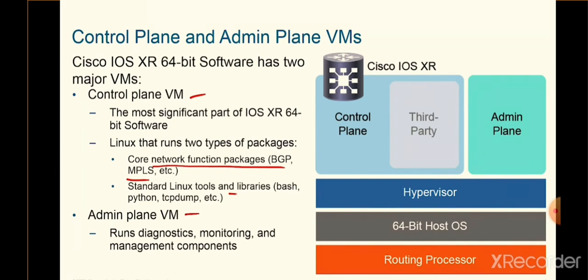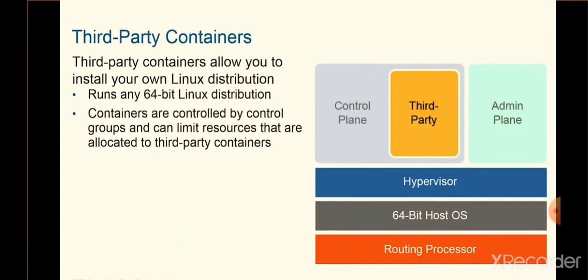The control plane also includes standard Linux tools and libraries. Since we're running Linux, we take advantage of extras like bash, Python, and tcpdump. The admin plane VM is more diagnostic-based — it handles the care and feeding of the local router itself. That's where you look at whether a process is misbehaving or something on the router needs attention. One advantage of running either a VM-based or container-based system is that we can run third-party containers.